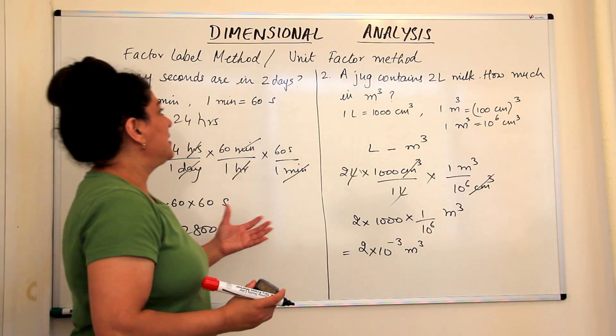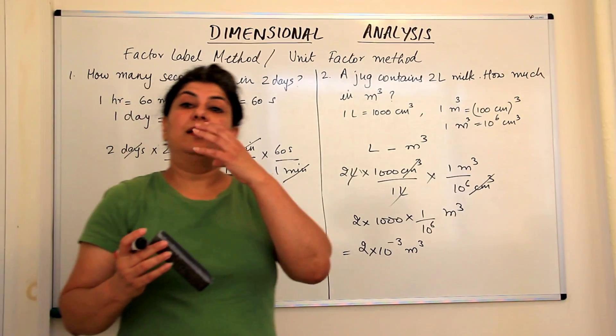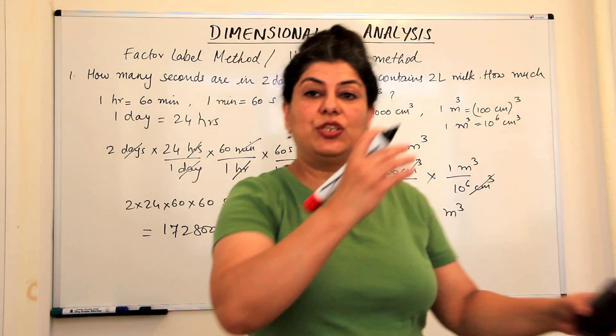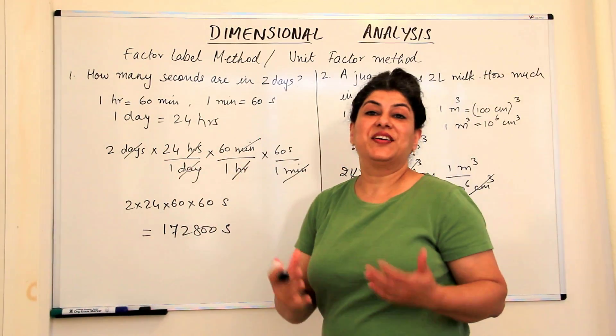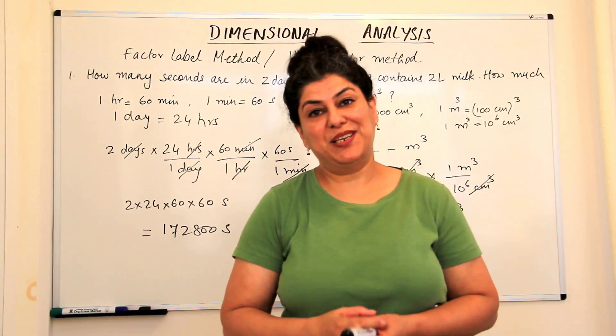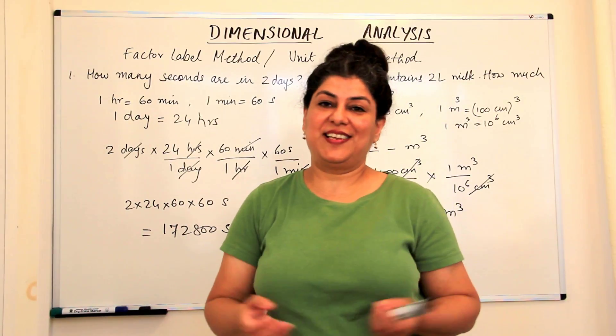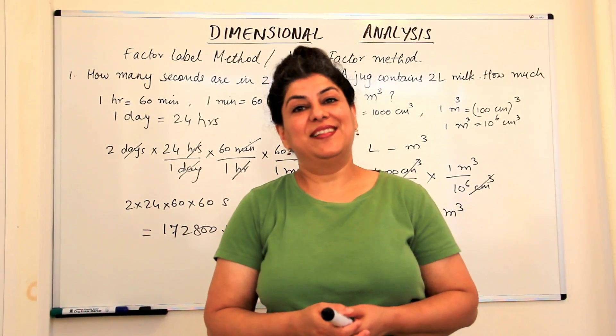Right? So this is how we use steps, we string the different conversion factors, the unit factors to get the desired result. So this was dimensional analysis. Practice as many questions as you can. Thank you.